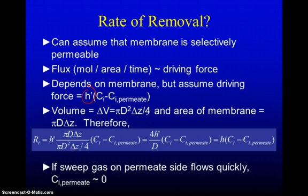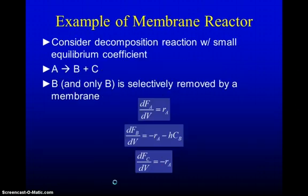The area of the membrane is given by pi d times delta z so the rate of removal is given by the transport coefficient times pi d delta z over pi d squared delta z over 4 so the dimensions are going to mostly cancel out. We have the concentration difference across the membrane. We end up with a parameter H which has the transport parameter as well as the diameter of the reactor. A lot of times we can assume that there's a sweep gas on the permeate side and it flows quickly so the concentration on the permeate side is approximately zero. That leads to a very simple expression for the rate of removal through the membrane.